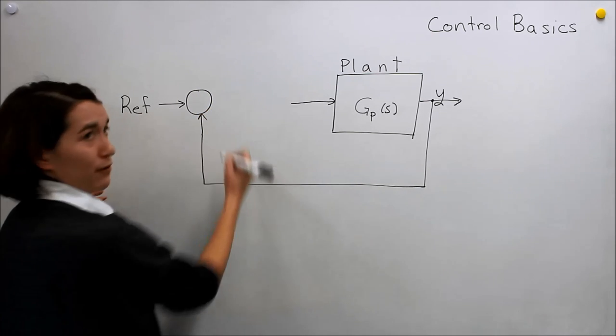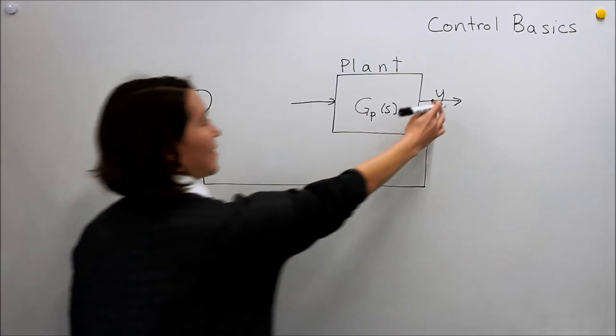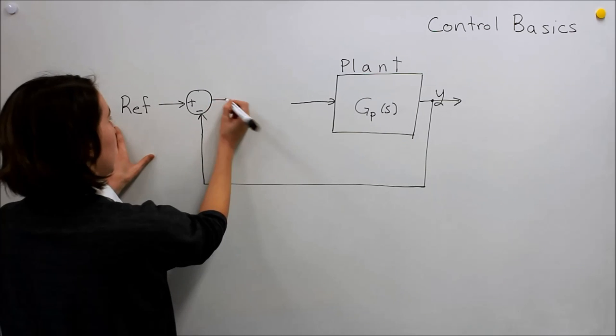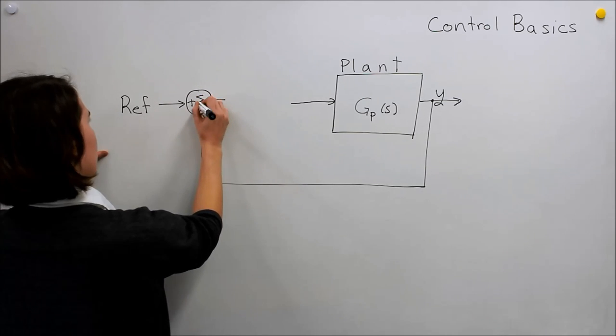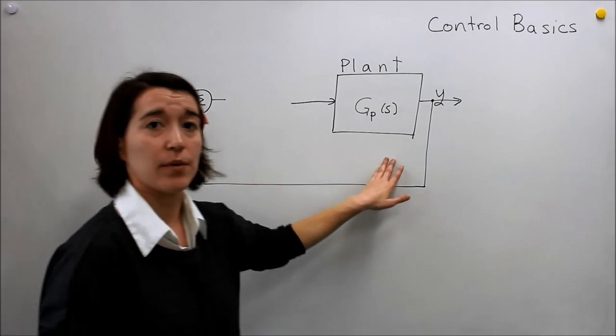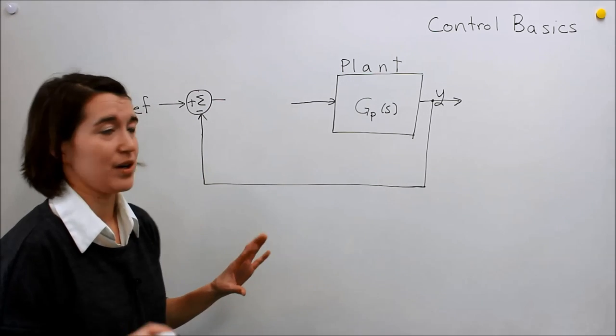usually you do plus the reference and minus this value. So if they're exactly at the same point, this is a summing block. So we take the reference, we subtract the output. If they're exactly the same, zero, and our system is already set, we're good.